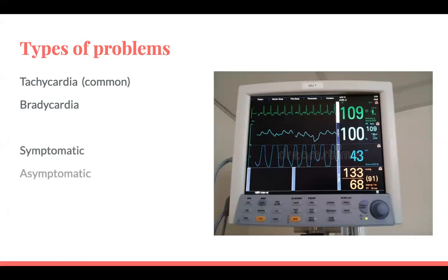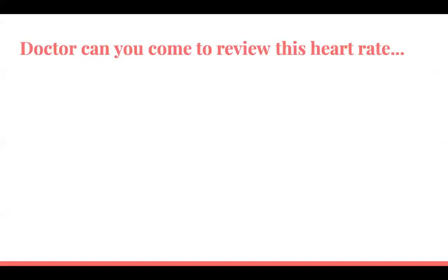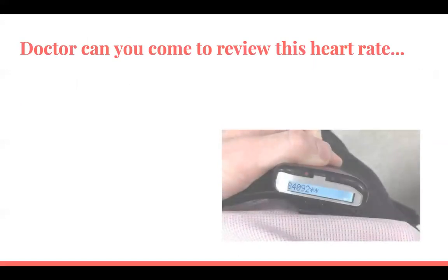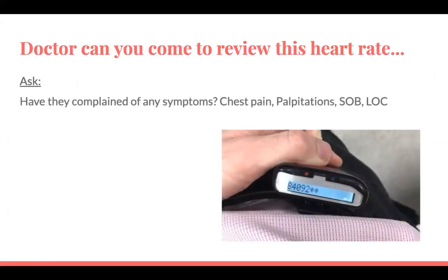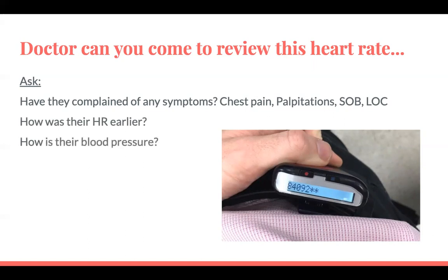Some of these are symptomatic patients and some are asymptomatic. When you've been asked to review a patient, what do you ask the nurse? The key things are: have they had any symptoms, particularly chest pain, palpitations, shortness of breath, or loss of consciousness? Was the episode asymptomatic? How was their heart rate earlier — were they always tachycardic or bradycardic, or is this new? And how is their blood pressure?